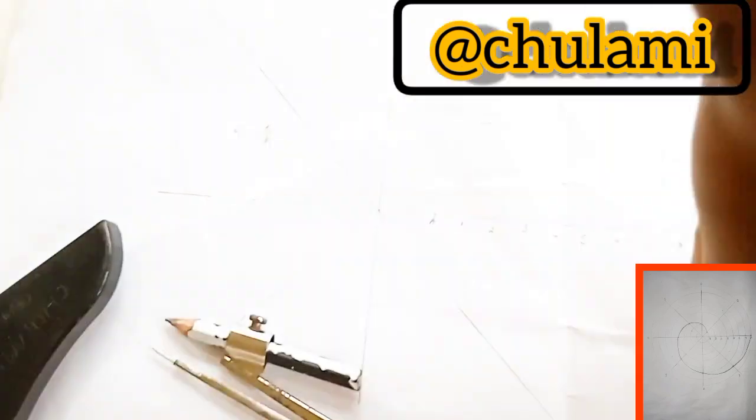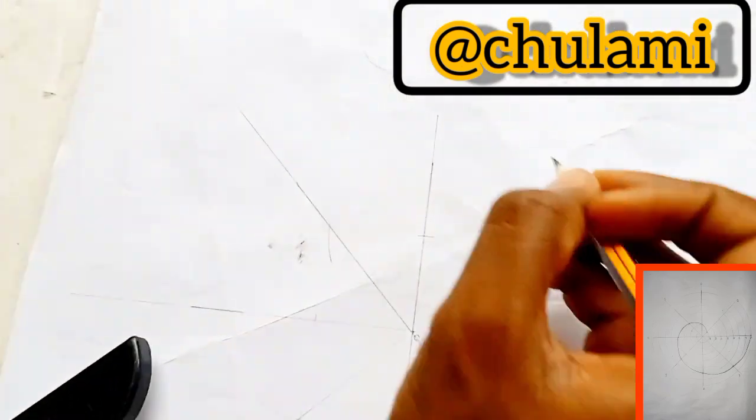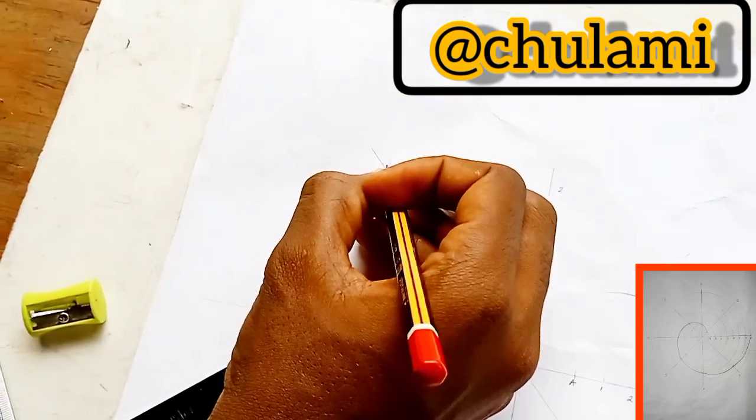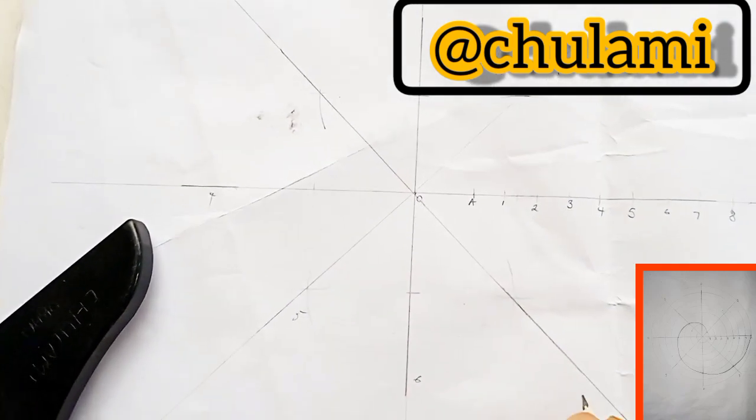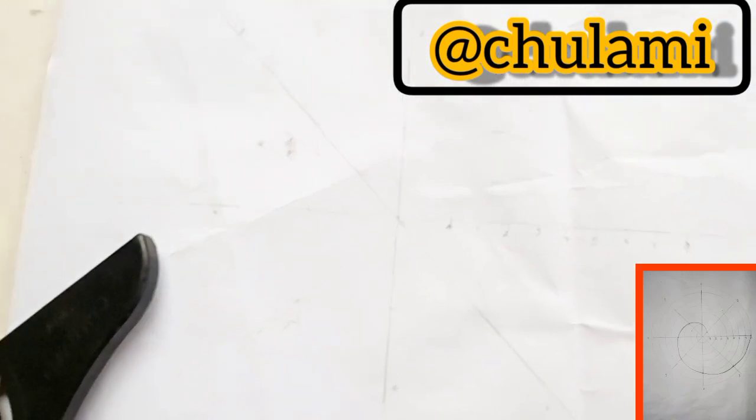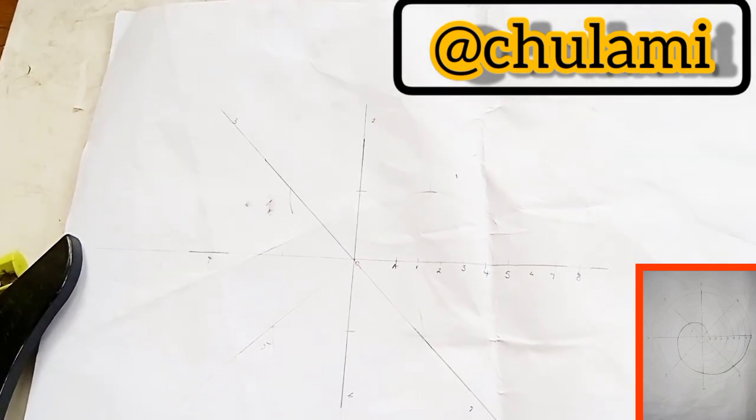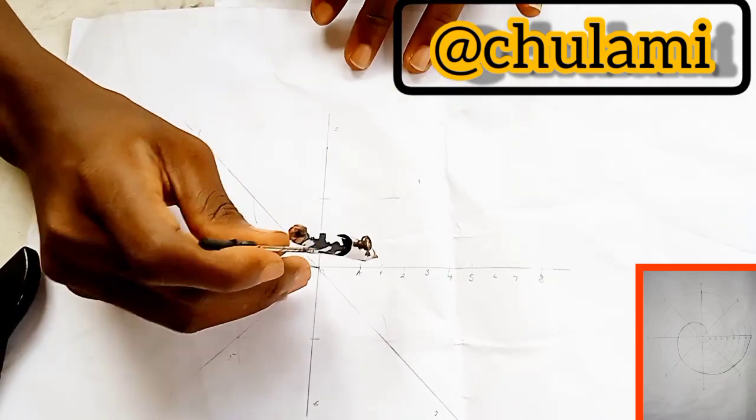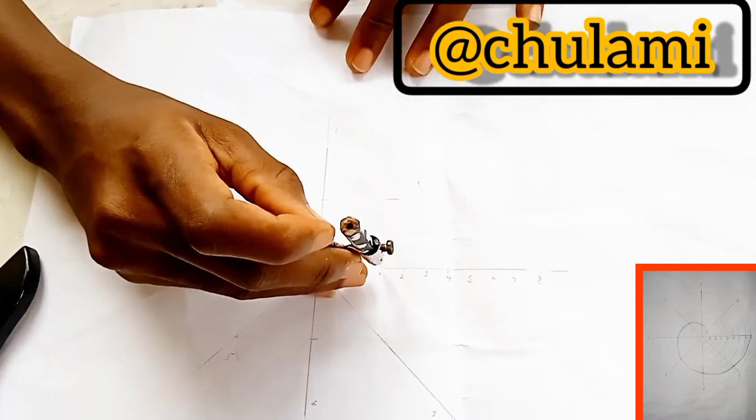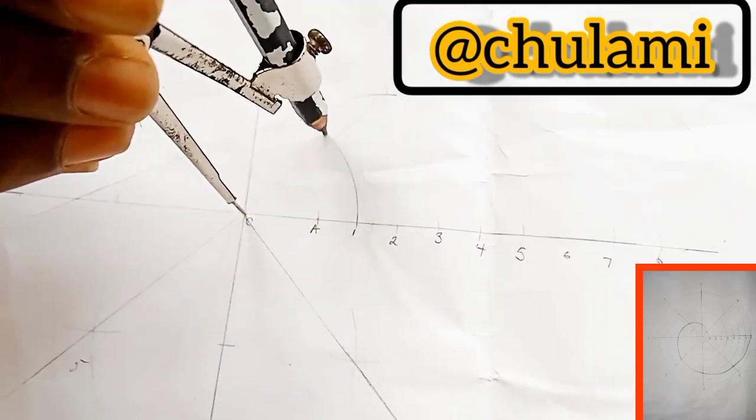Now, we'll also have to number these lines from 1 to 8. So this is line 1, line 2, line 3, 4, 5, 6, 7, and this line 8. Now, with our compass, pivot it at point 0, elongate it to point 1. Draw an arc stopping at line 1.